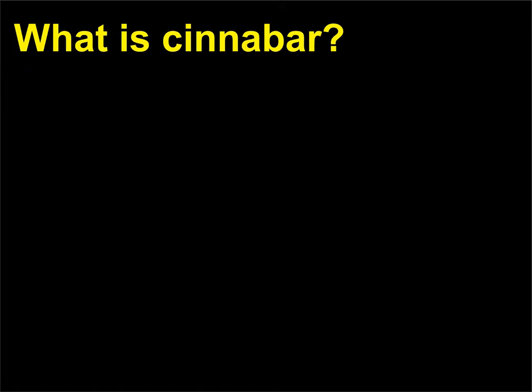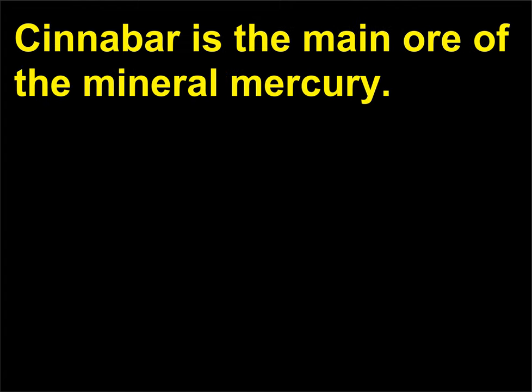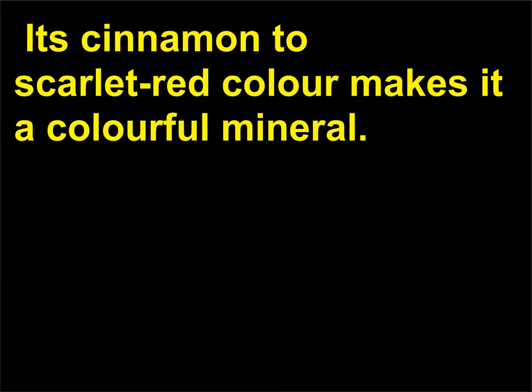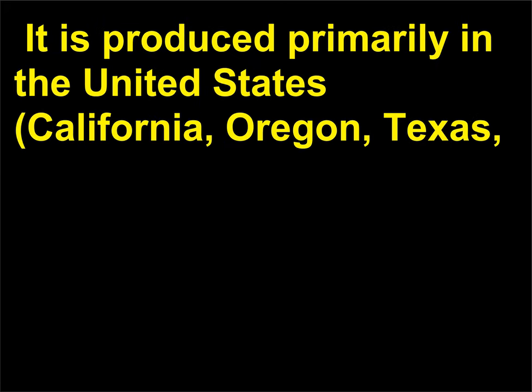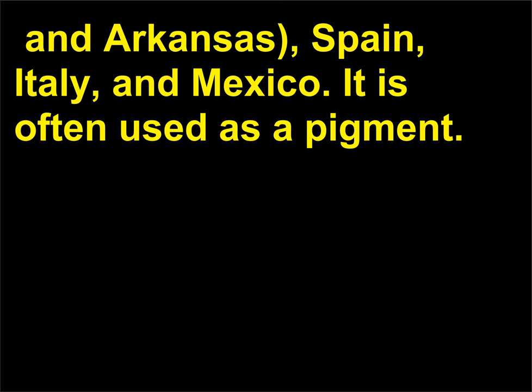What is cinnabar? Cinnabar is the main ore of the mineral mercury. Its cinnamon to scarlet red color makes it a colorful mineral. It is produced primarily in the United States (California, Oregon, Texas, and Arkansas), Spain, Italy, and Mexico. It is often used as a pigment.